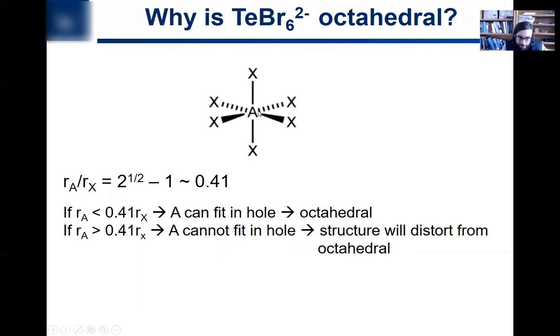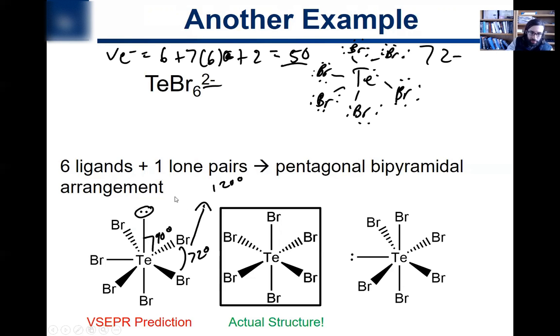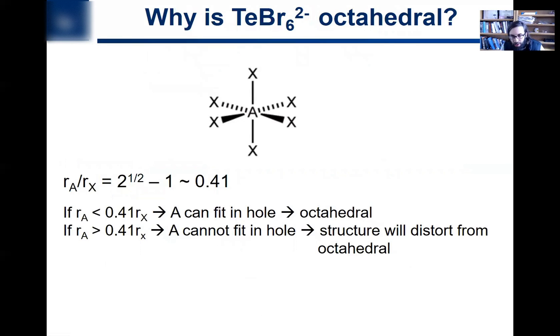I just want you to appreciate the steric argument here. It's a similar thing as for that nitrogen silyl complex compound I showed you. The largest circle that can fit in six circles oriented in an octahedron has a radius of 0.41 that of the larger atom. So if the central atom is less than 0.41 times the radius of the terminal atom, we are predicting that the central atom can fit in this hole there, and it'll be octahedral. Otherwise, if it's too big, we're going to have distortion, and we're going to have a distorted octahedral complex. It doesn't really have a special name. It's a seven-coordinate system.